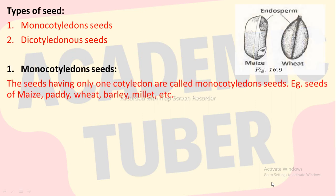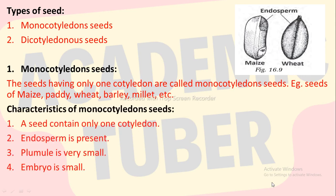Monocotyledonous seed. The seeds having only one cotyledon are called monocotyledonous seeds, for example seeds of maize, paddy, wheat, barley, millet, etc. Characteristics of monocotyledonous seeds: a seed contains only one cotyledon, endosperm is present, plumule is very small, and embryo is small.